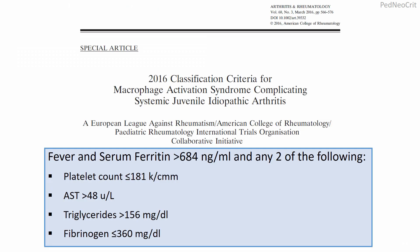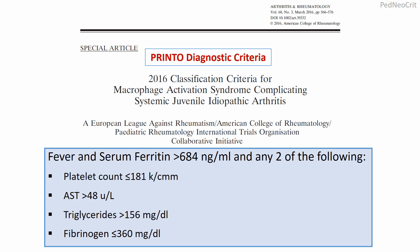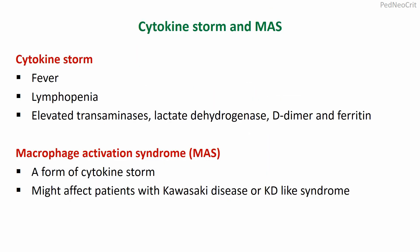Macrophage activation syndrome is actually associated with juvenile idiopathic arthritis but can be present in other infectious or inflammatory conditions as well. This diagnostic criteria is also known as the Printo diagnostic criteria: fever and serum ferritin more than 684 nanogram per ml, and any two of the following — platelet less than 181,000 per cubic millimeter, AST more than 48 units per liter, triglyceride more than 156 mg/dl, and fibrinogen less than 360 mg/dl. Cytokine storm includes fever, lymphopenia, elevated transaminase, lactate dehydrogenase, D-dimer, and ferritin. Macrophage activation syndrome is a form of cytokine storm that may be associated with many inflammatory conditions including Kawasaki disease or Kawasaki-like syndrome.